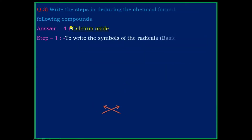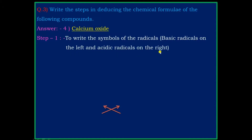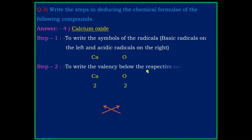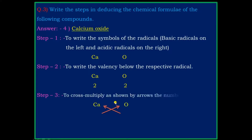Question 4: Calcium Oxide. Step 1: write the symbol of the radical — basic radical on the left and acidic radical on the right. The symbol of calcium is Ca and the symbol of oxide is O. Step 2: write the valency below the respective radicals — the valency of calcium is 2 and the valency of oxygen is 2. Since both valencies are the same, divide by 2, giving 1 and 1.